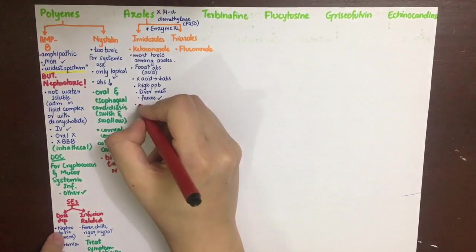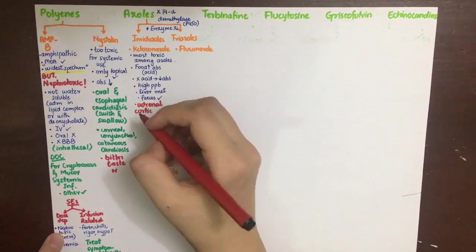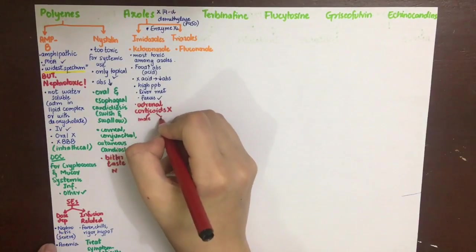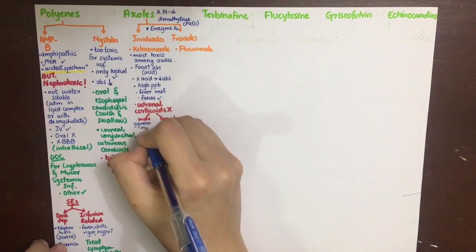Just as it inhibits ergosterol synthesis in the fungus, in males it will cause gynecomastia and in females it will cause menstrual irregularities.